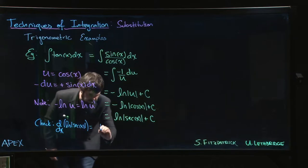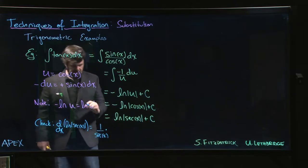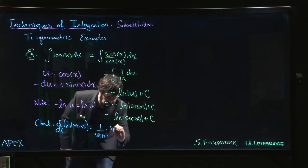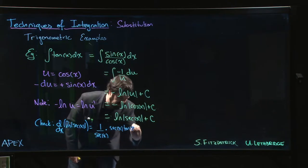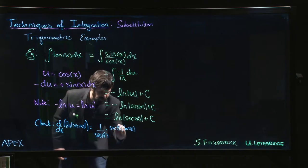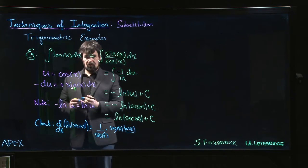So I get 1 over the inside, so I get 1 over secant x. I got to multiply by the derivative of secant x, which is secant x times tan x. And conveniently enough, those secants cancel out, leaving me with tan, which is what's supposed to happen.